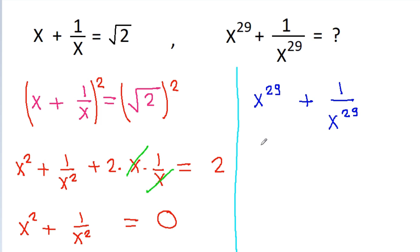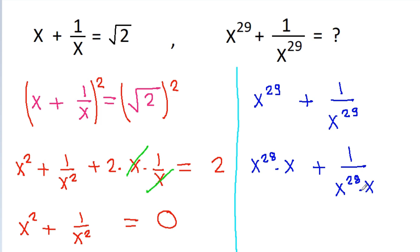x power 29 can be written as x power 28 into x minus 1 by x power 28 into x. And x power 28 is x power 4 to the power 7 into x, minus 1 by x power 4 to the power 7 into x.